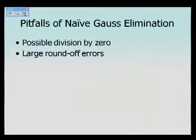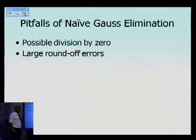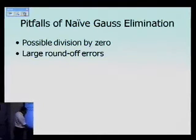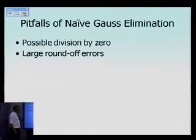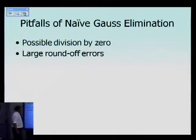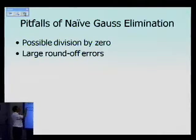The reason why we talk about Gaussian elimination with partial pivoting is because there are certain pitfalls of naive Gaussian elimination. One is that there's a possible division by zero, and the other is that you get large round-off errors. Those are the two pitfalls of the naive Gaussian method when we use it to solve simultaneous linear equations.